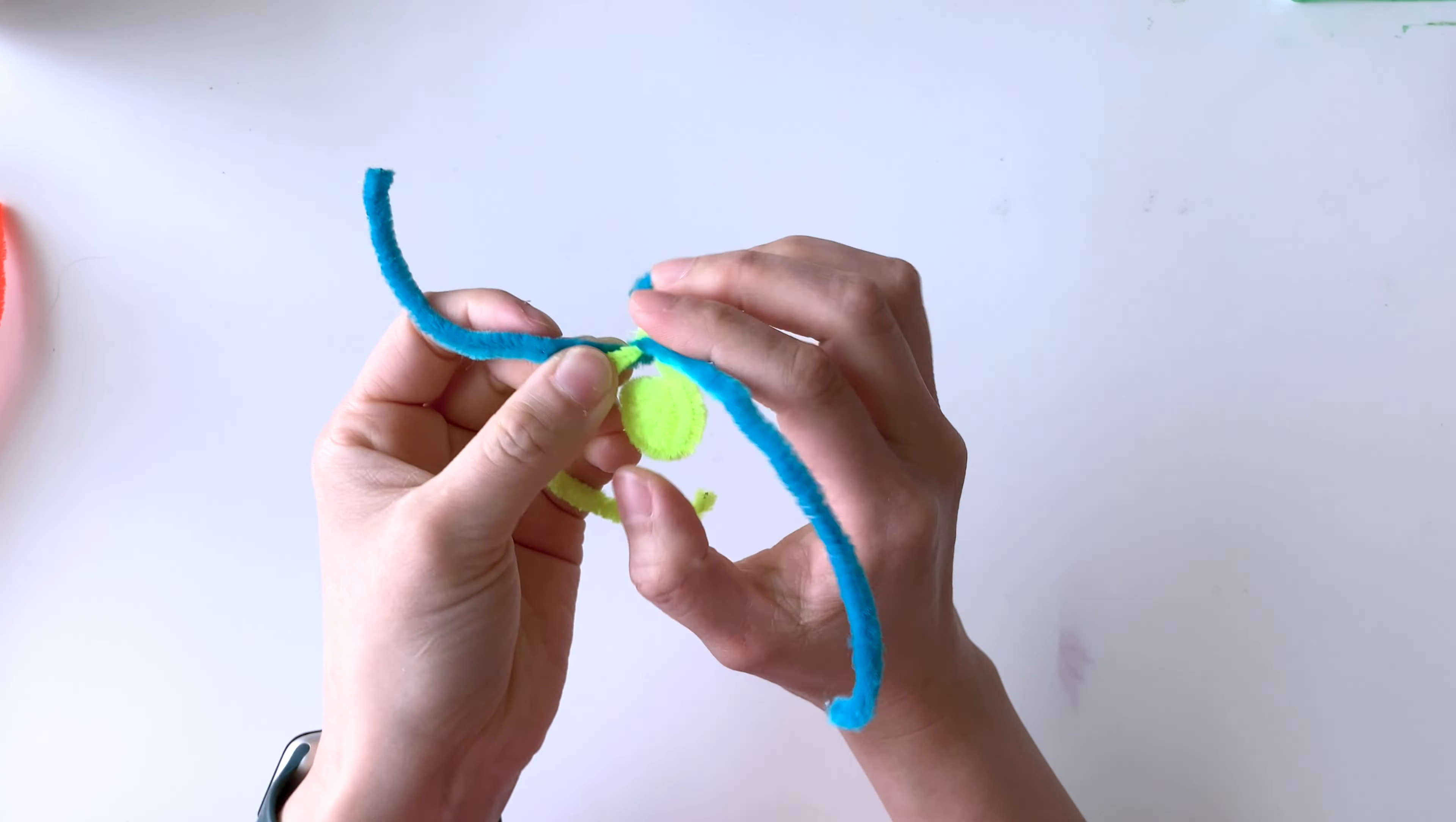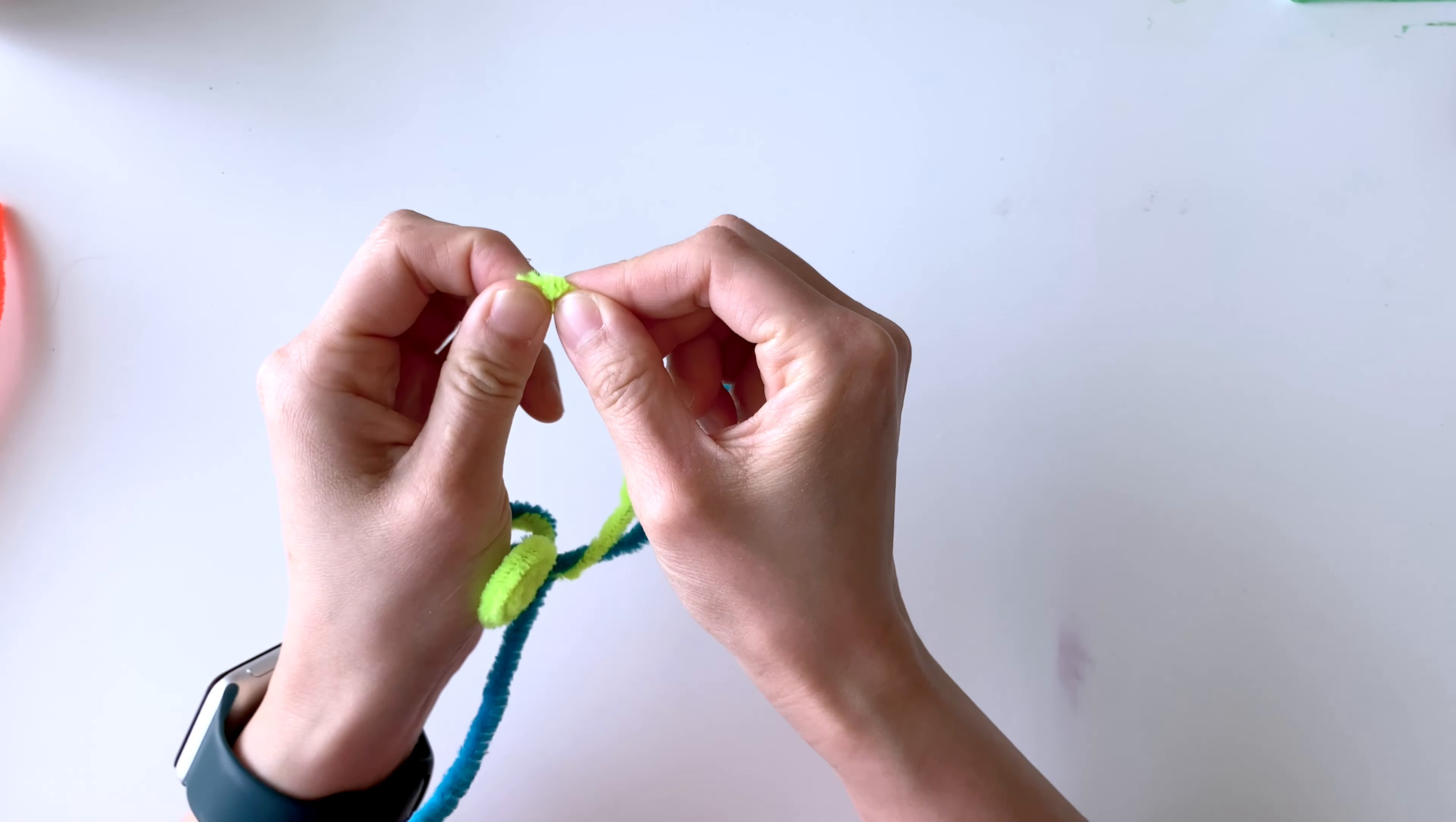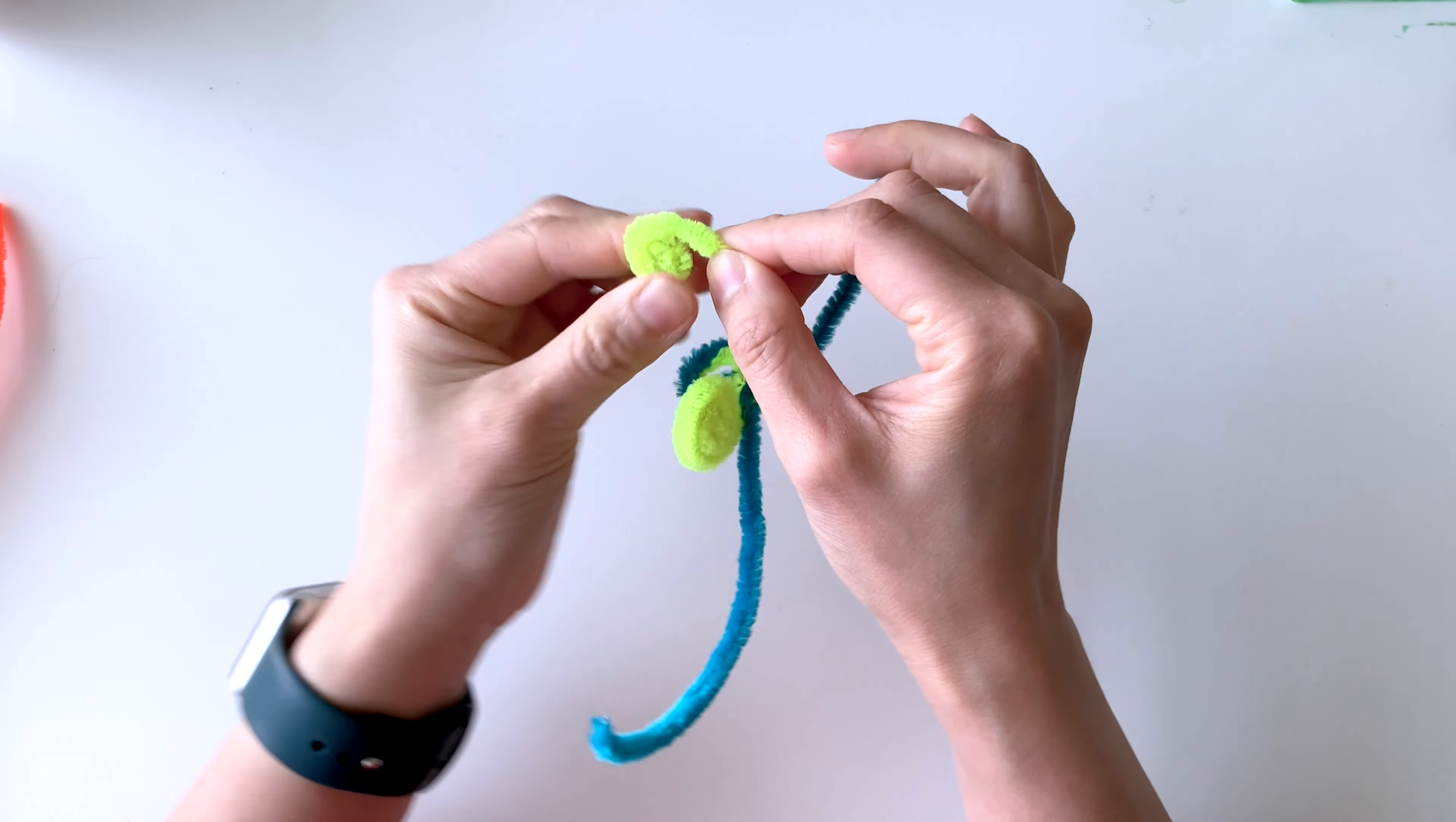Now using the other three loose pieces, I'm going to do the same thing. So starting from the end, curl it inwards and then start coiling it in a circular motion.